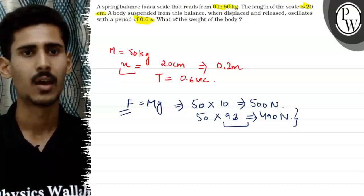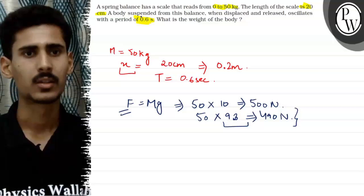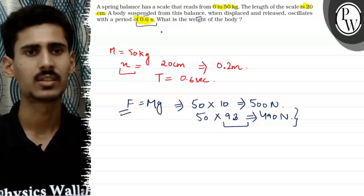But what we have to find? We have to find that the body will suspend a balance. And when it is displaced, then the oscillation is 0.6 seconds.